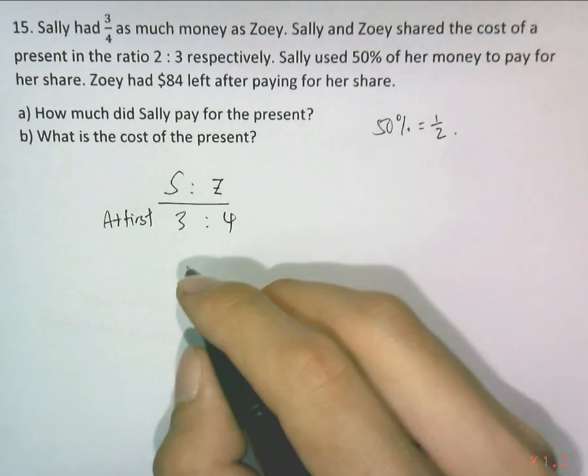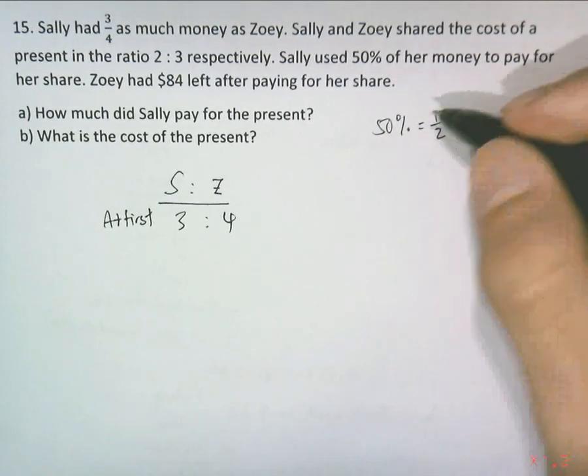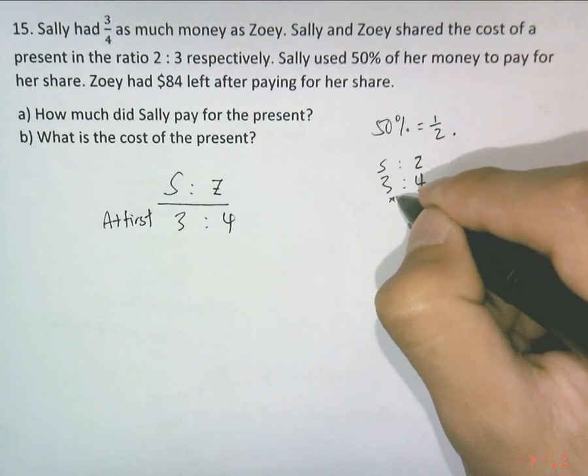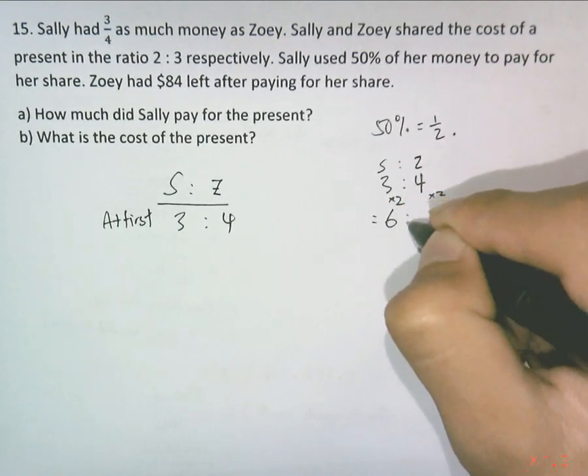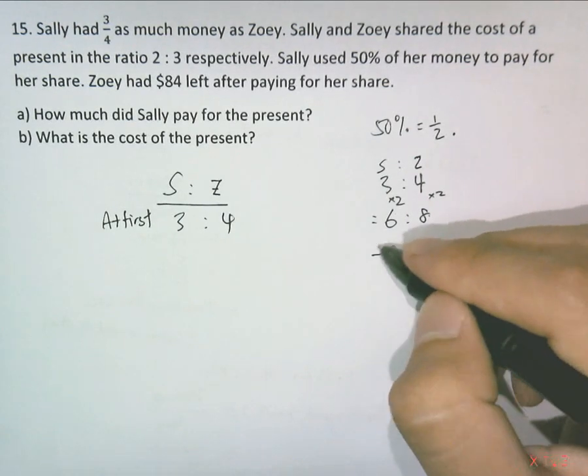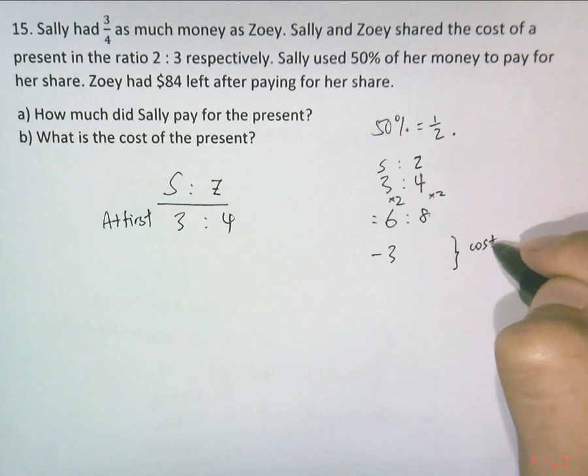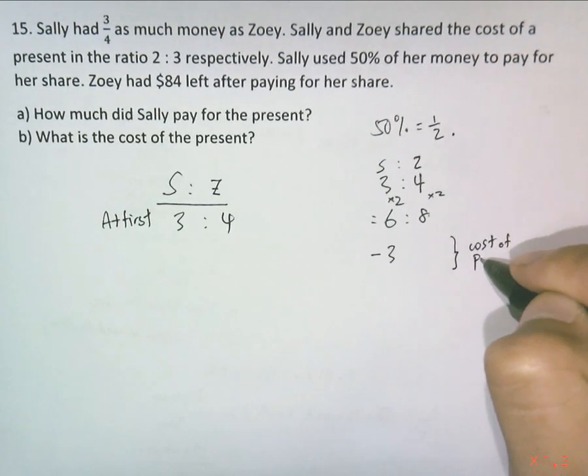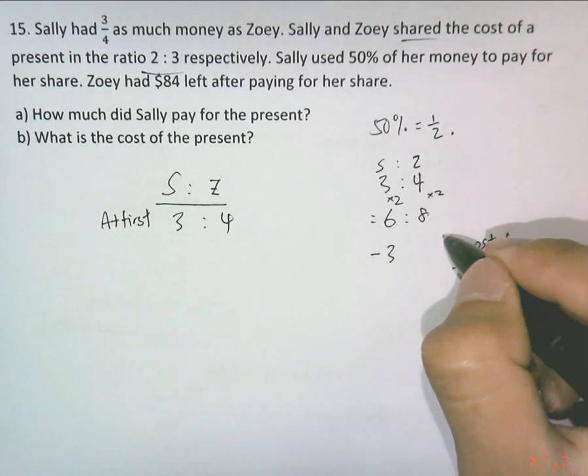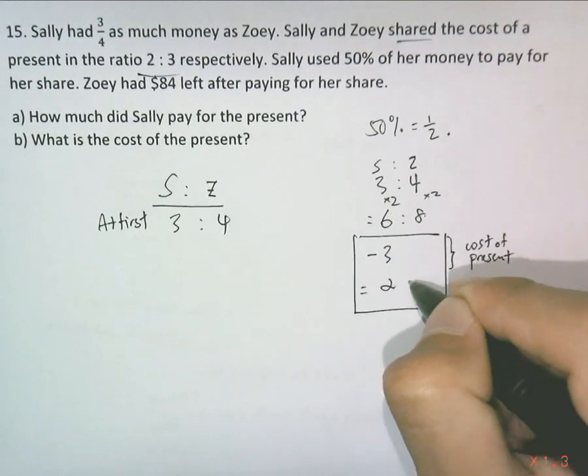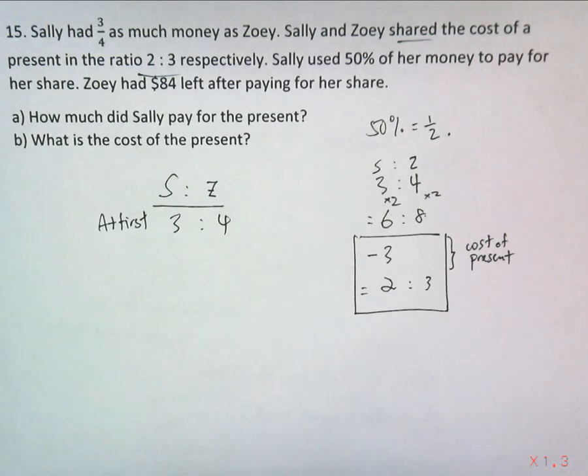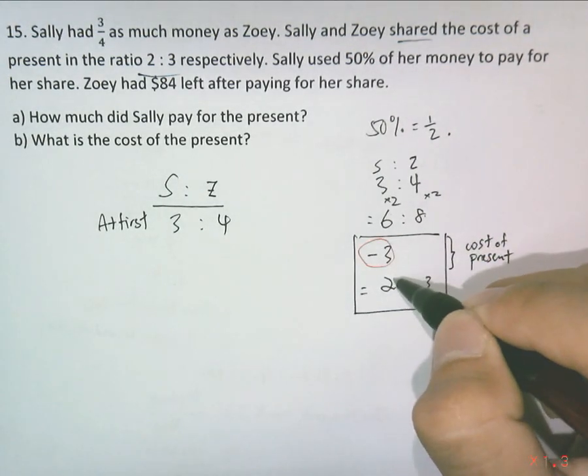So trying this out, you can do a quick check here. 3 to 4, if you times 2, this will give us 6 to 8. Subtracting 3, but this ratio that is given for the cost of the present is supposed to be shared according to this ratio, 2 is to 3. So that means whatever I see here must be the same as 2 is to 3 as well. However, there's a difference here. This number is 3, this is 2. They are not the same.